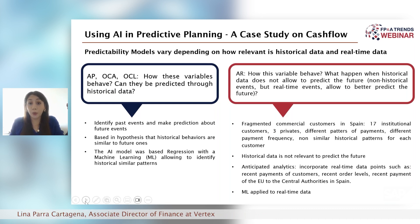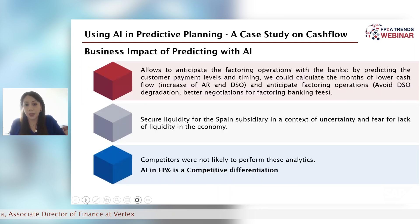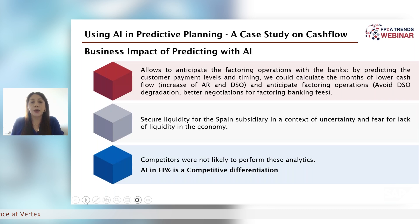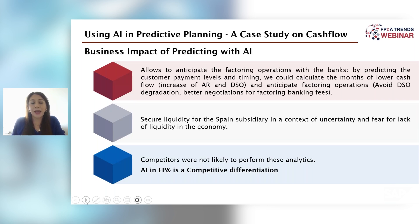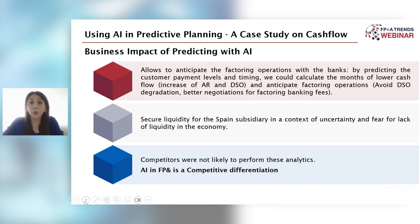Machine learning is not only for historical data — you can also train models on real-time data. The most important point of this business case is the business impact. We were able to decrease AR and DSO, and we anticipated the level of AR and DSO early enough to negotiate better fees with the bank, even in February or March 2020, which allowed us to secure the affiliate's liquidity for the rest of the year and into 2021.